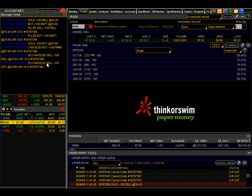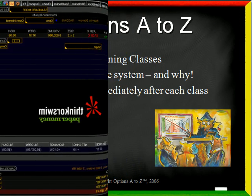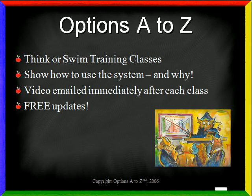Using Advanced Orders is fast and easy in Thinkorswim, and these are great tools for legging into various strategies or morphing into new ones. Understanding these invaluable tools puts you one step closer to mastering the art and science of options trading. If you are interested in advanced training on Thinkorswim, please visit www.optionsatoz.com. I have a five-week Thinkorswim training class where I'll show you how to use the system and, more importantly, why you would select one type of order or process over another. A video recording of each class will be sent to you immediately following each session, and you'll also get free updates whenever Thinkorswim makes changes to their system. I hope you've enjoyed the video and now understand the various types of orders in the Advanced Order menu.